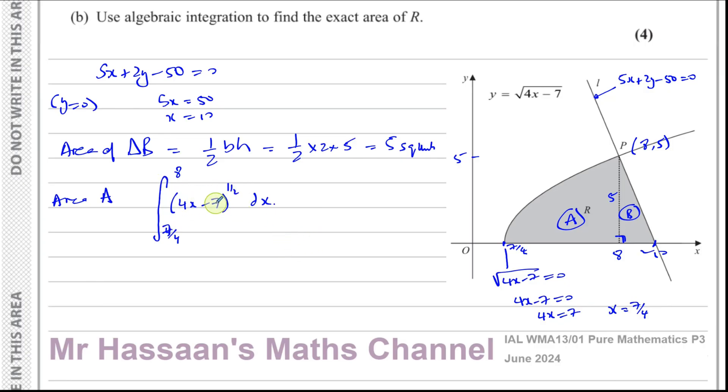Now this is something we can reverse the chain rule for because it's of the form f dash of x times f of x. If you differentiate what's inside, you get a constant, 4. So we can add 1 to the power: 4x minus 7 to the power of 3 over 2, divided by the new power, which is 3 over 2, and then multiplied by the differential what's inside the function, which is 4. All of this is to the limits of 8 and 7 over 4.